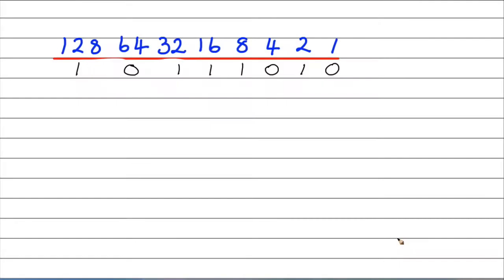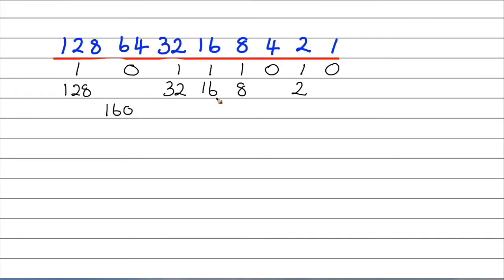Here's another example. Everywhere there's a 1, we add that value. So 128 plus 32 plus 16 plus 8 plus 2. Add the decimal numbers up: 128 plus 32 is 160, plus 26 is 186.